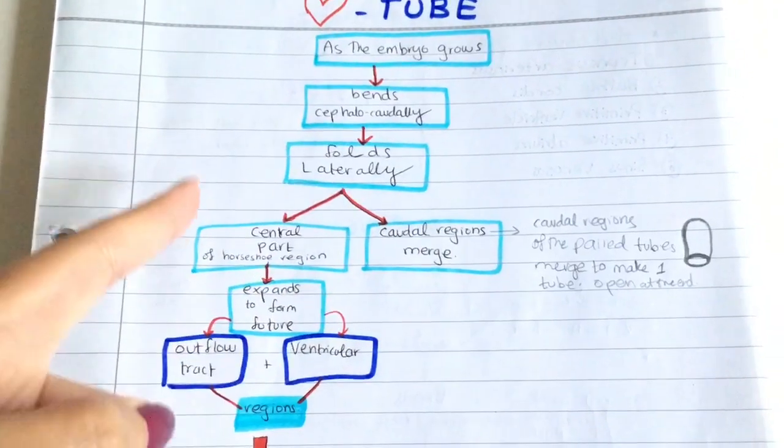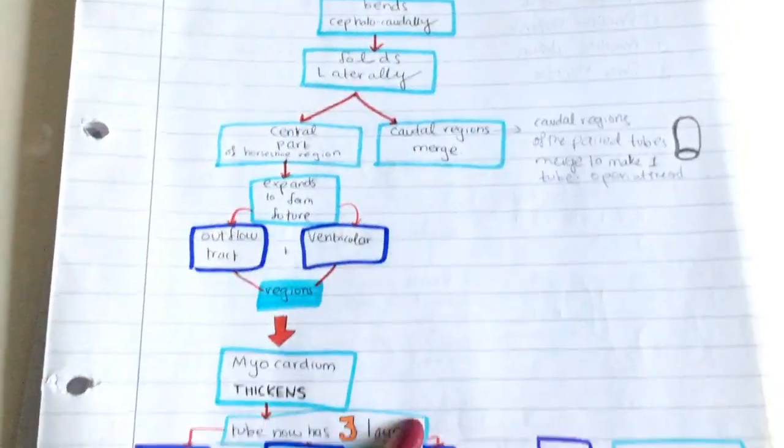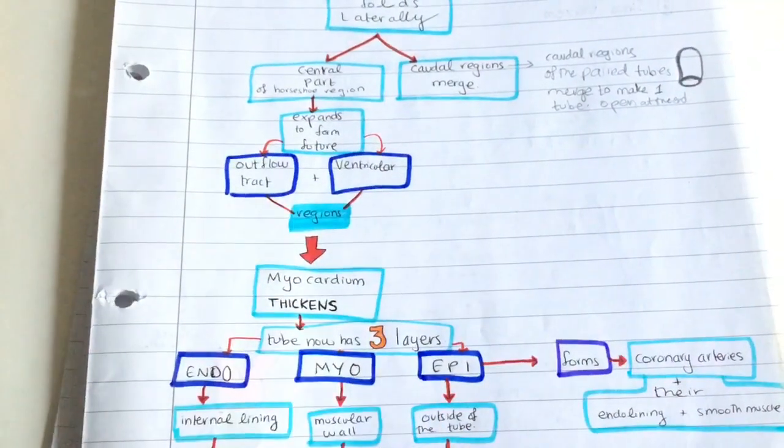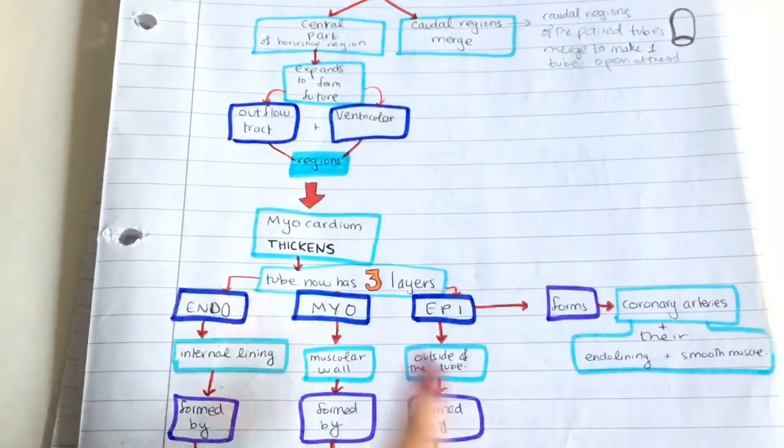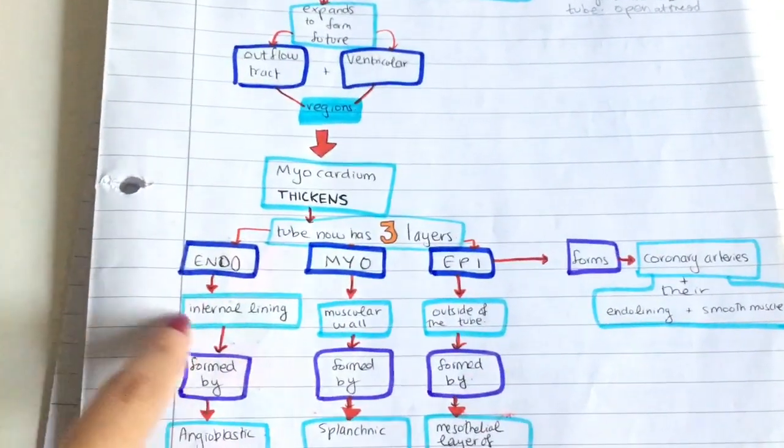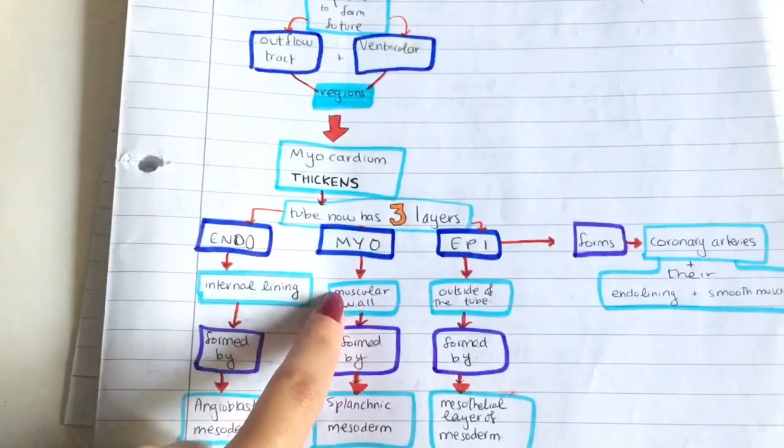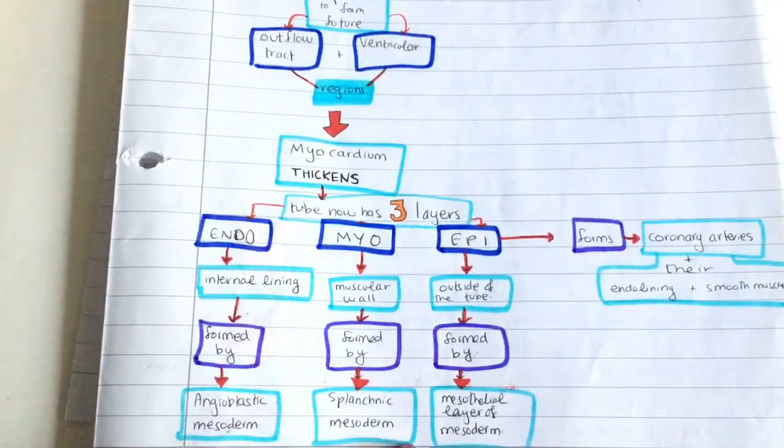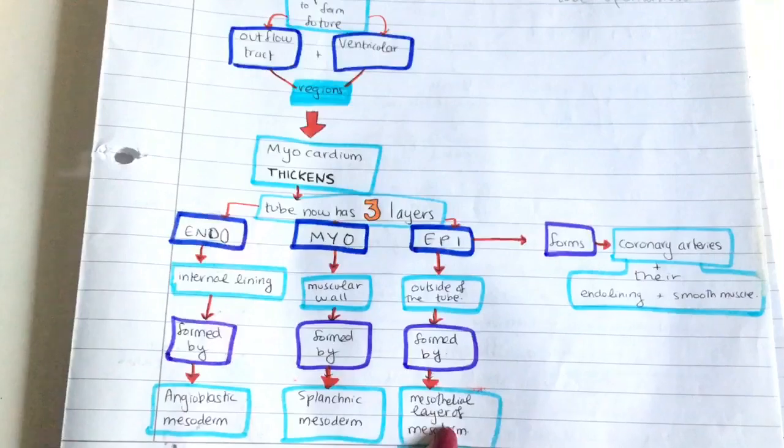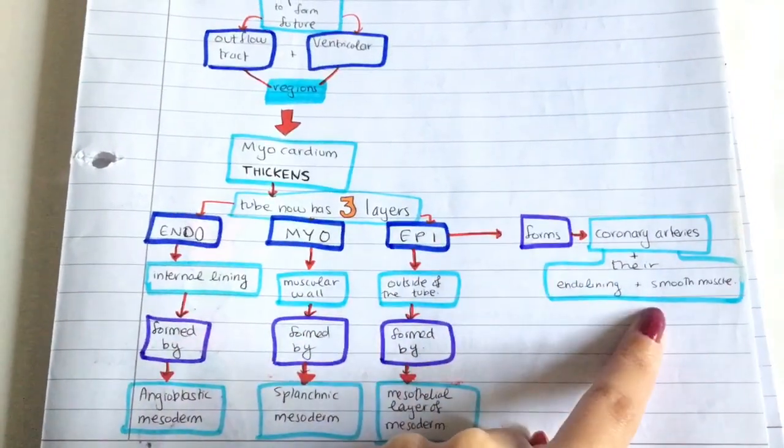The central part of that heart tube region expands to form the future outflow tract and the ventricle areas. Your myocardium thickens, and now your tube has three layers: the endocardium, myocardium, and epicardium. The endocardium forms the internal lining from angioblastic mesoderm. The myocardium is a muscular wall from splanchnic mesoderm. The epicardium is the outside of the tube from the mesothelial layer of the mesoderm, and it forms the coronary arteries and their endothelial lining and smooth muscle.